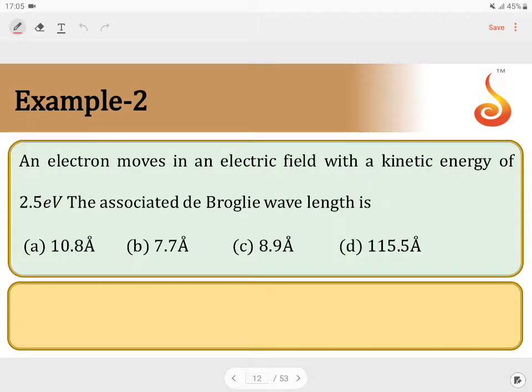Example number two. An electron moves in an electric field with the kinetic energy of two electron volts. They have given the kinetic energy of the electron. The associated de Broglie wavelength...